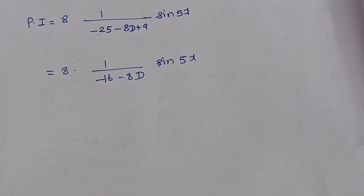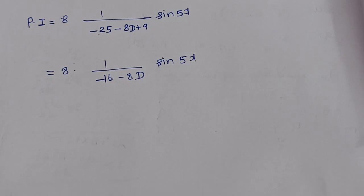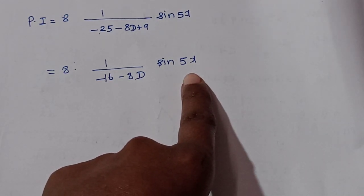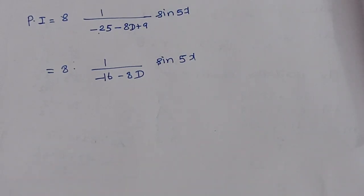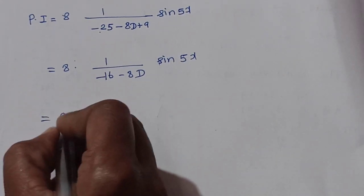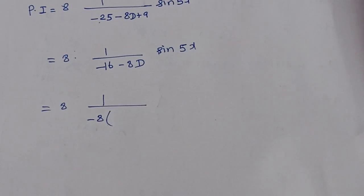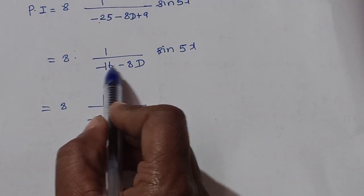The denominator still contains D as an operator, so we cannot directly substitute. Since the denominator is minus 16 minus 8D, we factor out minus 8, giving minus 8 times (2 plus D). Then the PI becomes 8 divided by [minus 8(D plus 2)] into sin 5x. The 8s cancel, giving minus 1/(D plus 2) into sin 5x.